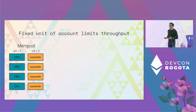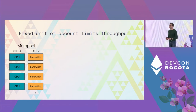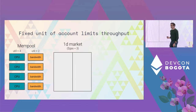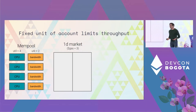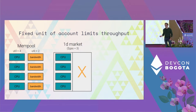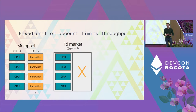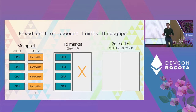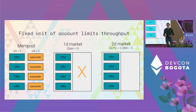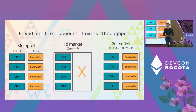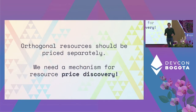Assume we have users submitting transactions: some only consume CPU, some only consume bandwidth. The CPU ones have utility of four, bandwidth ones have utility of two. Each transaction costs one gas, the gas price is three, and the block can fit four CPU and four bandwidth transactions. In a single-dimensional market, we fill up with CPU transactions but leave bandwidth block space unused because those transactions aren't high enough utility. However, in a 2D market where CPU has cost three but bandwidth has cost one, we fill up all CPU and all bandwidth transactions. If resources are orthogonal, they should be priced separately.